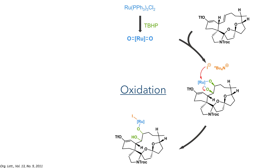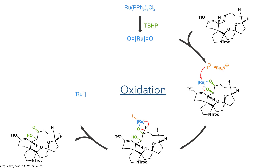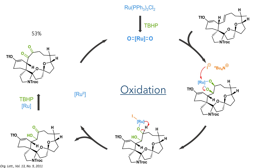Iodide, present in the form of TBAI, then attacks the ruthenium center, displacing one of the oxygen ligands. Beta-hydride elimination of the ruthenium species generates the ketone, and the alpha-hydroxyl group can then be further oxidized by ruthenium and TBHP to form the diketone in a 53% yield.